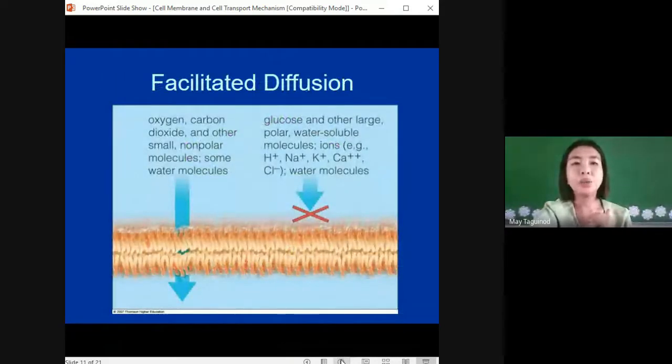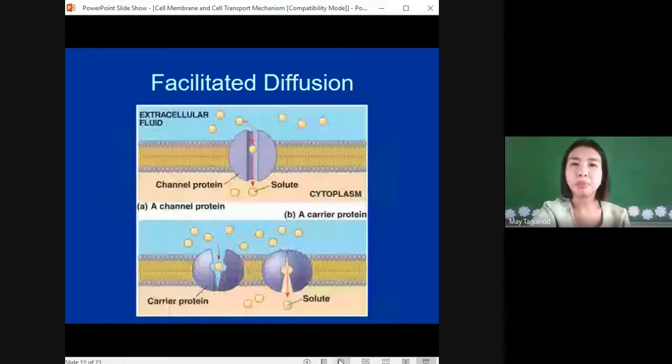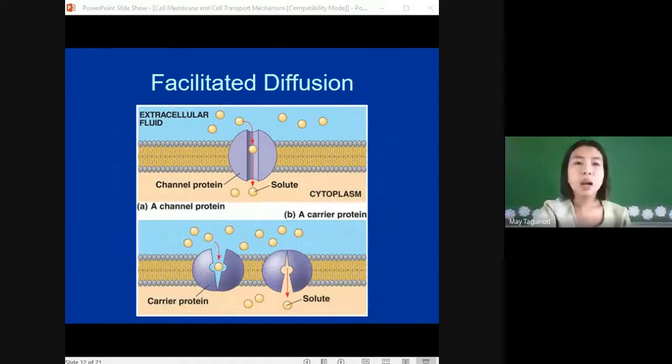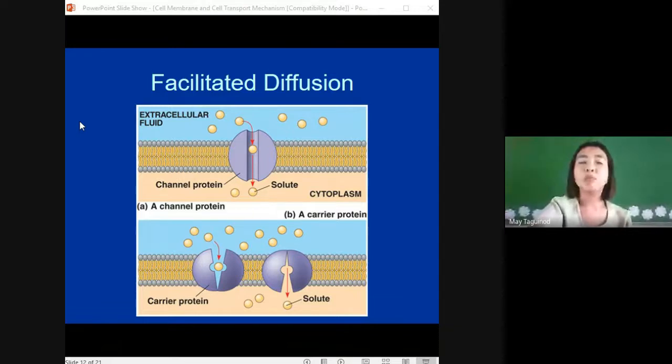Next is facilitated diffusion. This is when molecules that cannot directly diffuse across the membrane pass through specific protein channels, and there is no additional energy required. What characterizes facilitated diffusion from other types of passive transport is the need of assistance from a transport protein in the plasma membrane. The passive movement of substances such as biological molecules or ions across a plasma membrane by means of a transport protein. Since the movement of substances is from greater to lesser concentrations, chemical energy is neither used nor required.